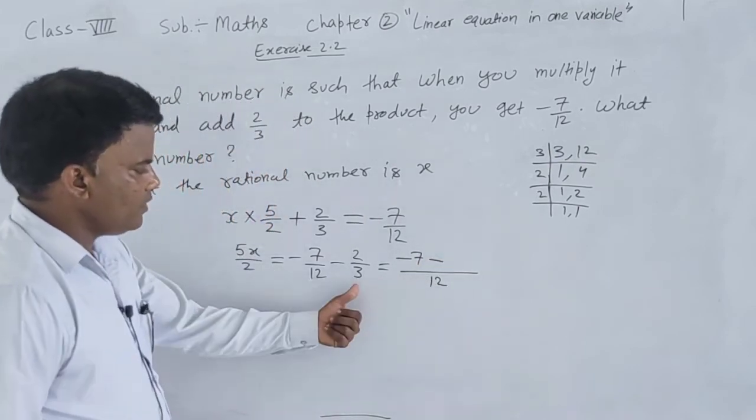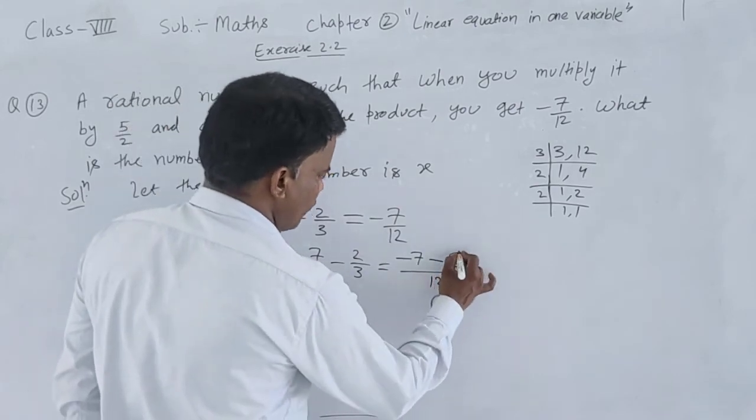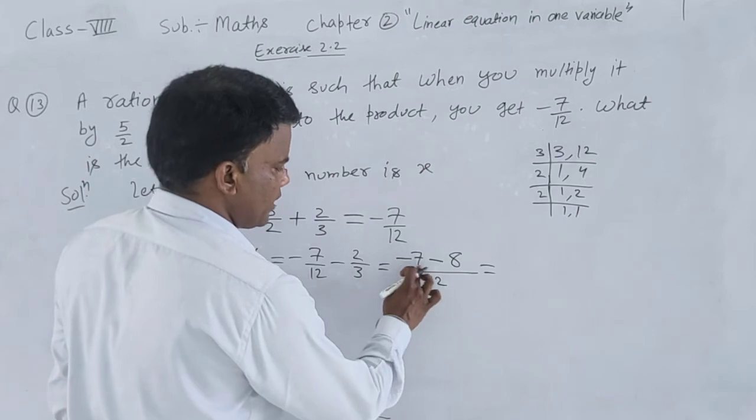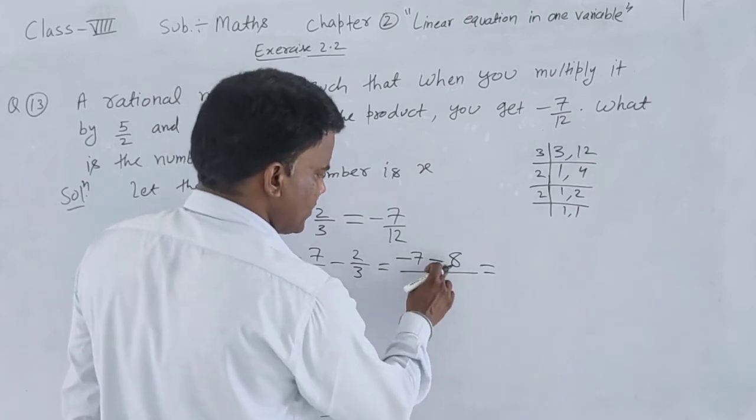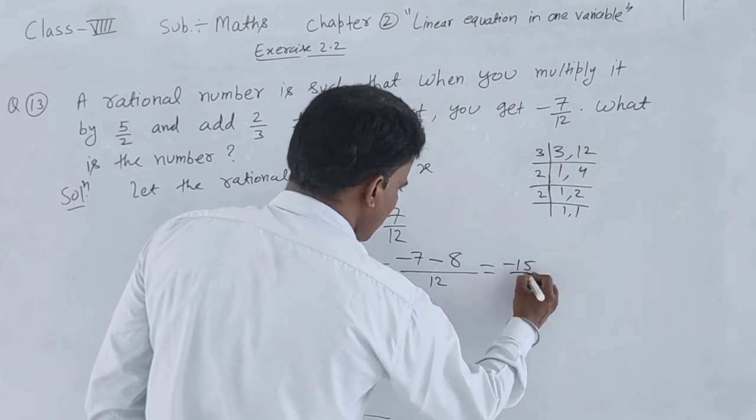12 divided by 3 is 4. 4 times 2 is 8. Same sign, add. Minus 8 minus 7 equals minus 15. Minus 15 upon 12.